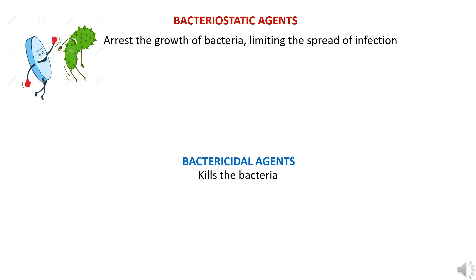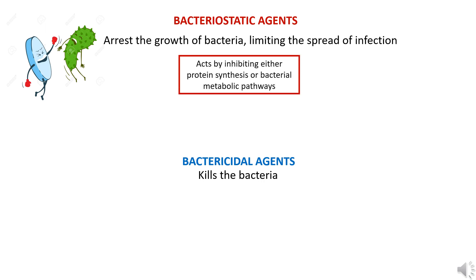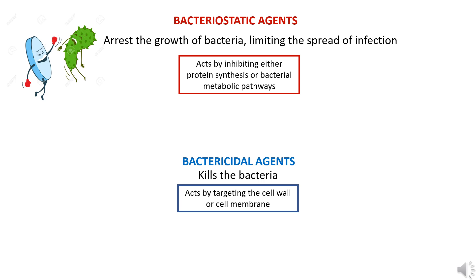Bacteriostatic agents arrest bacterial growth mainly by inhibiting either protein synthesis or bacterial metabolic pathways. Antibiotics act through many mechanisms — they can inhibit cell wall synthesis, cell membrane synthesis, protein synthesis, or particular enzymes within the bacteria. Bacteriostatic agents specifically act by inhibiting protein synthesis or metabolic pathways. Bactericidal agents target the cell wall or cell membrane, increasing its permeability or causing damage to it, which kills the bacteria.